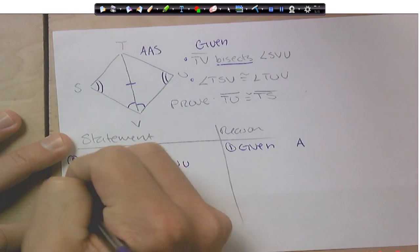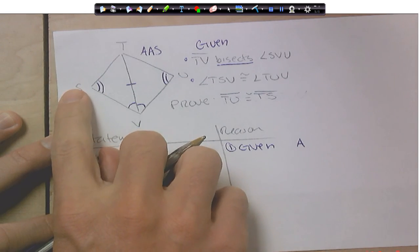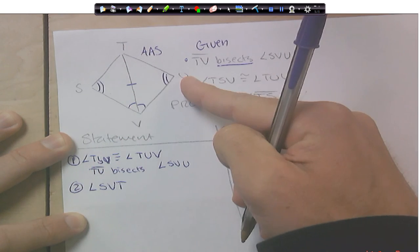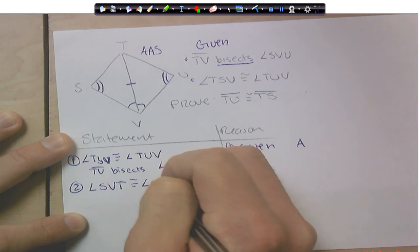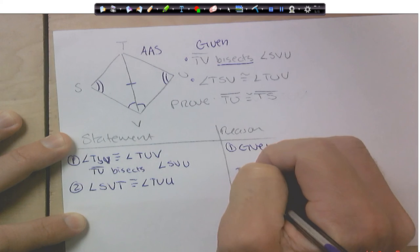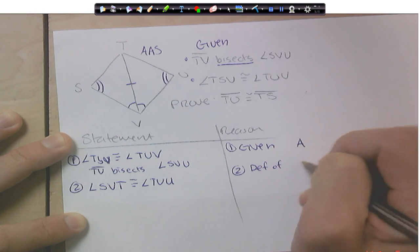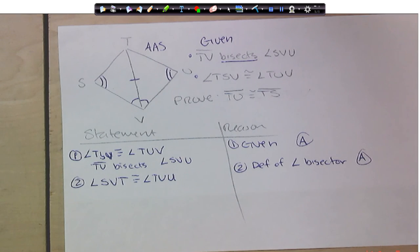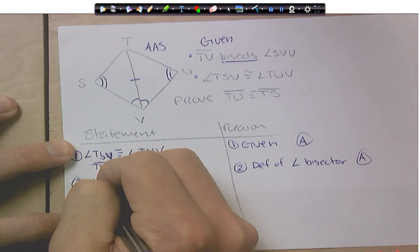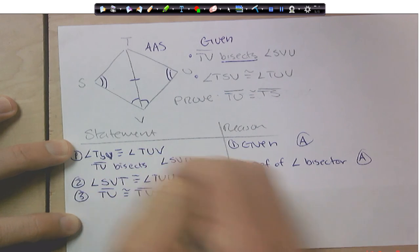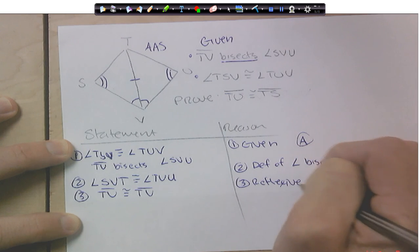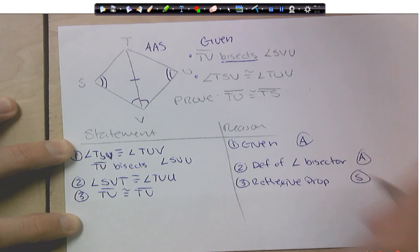Next, since we did the bisecting piece, let's go ahead and talk about which ones are congruent. So, angle SVT and angle TVU, those are congruent. And that's just the definition of angle bisector. There we go. We proved another angle congruent. So, so far we got an angle and an angle. Now we got to prove a side. That would be TV is congruent to TV, and that's by reflexive property. So, there's a side.